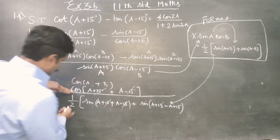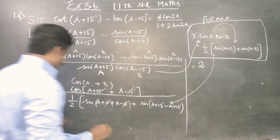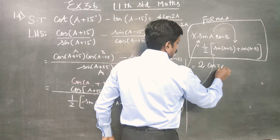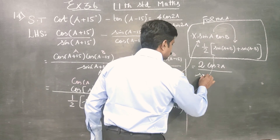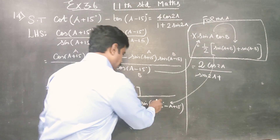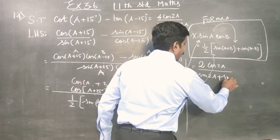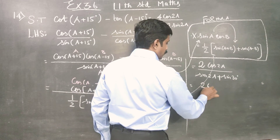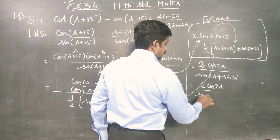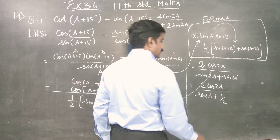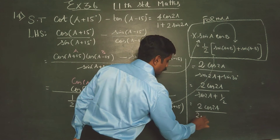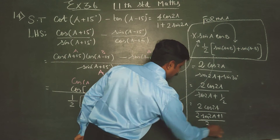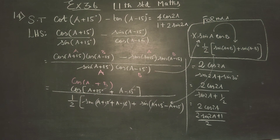Now we have two reciprocals, two numerators. cos(2a) — since a+a is 2a — and sin(2a), since 15+15 gives sin(30). So we have two cos(2a) by sin(2a). What is sin(30)? It is 1 by 2. Take LCM or cross multiply: two cos(2a) by 2sin(2a) plus 1 by 2.